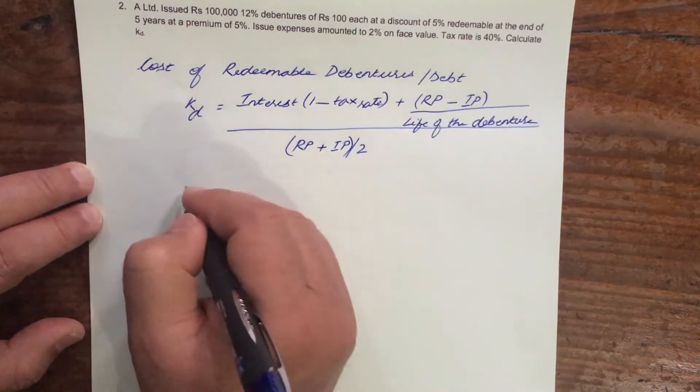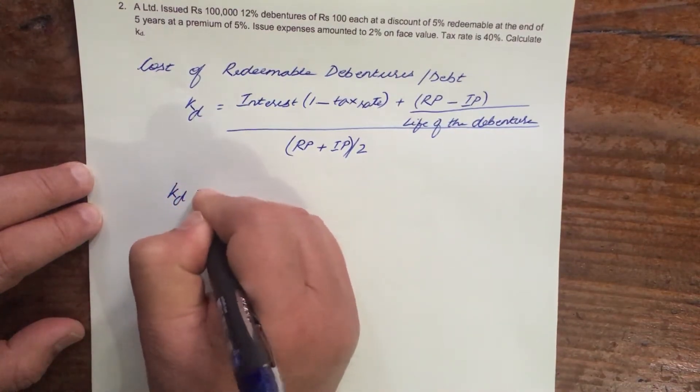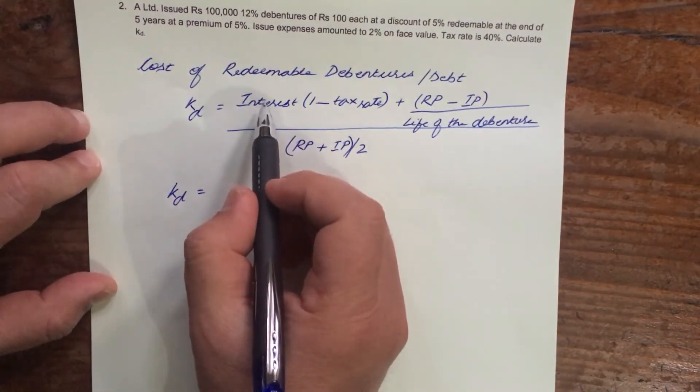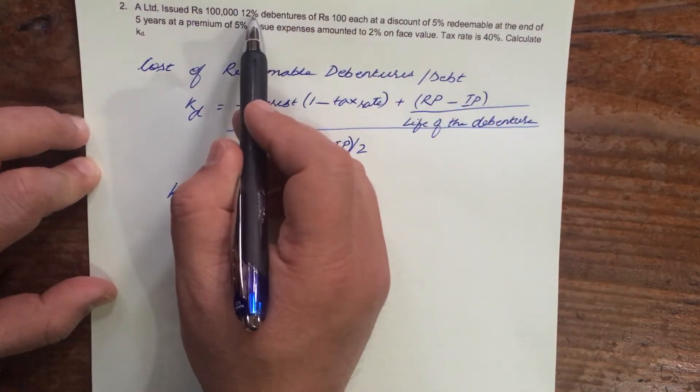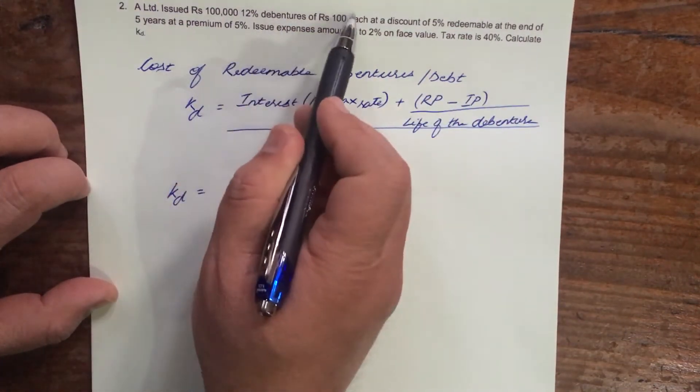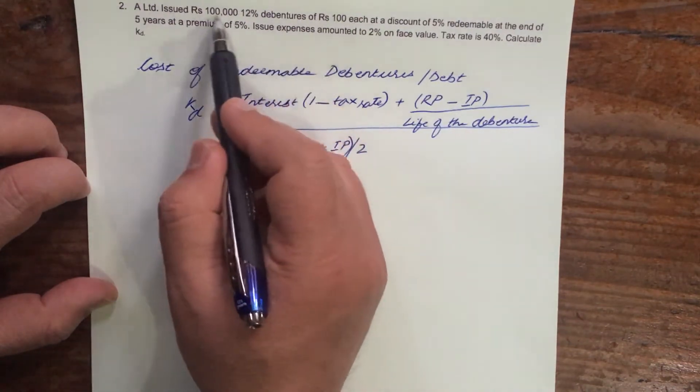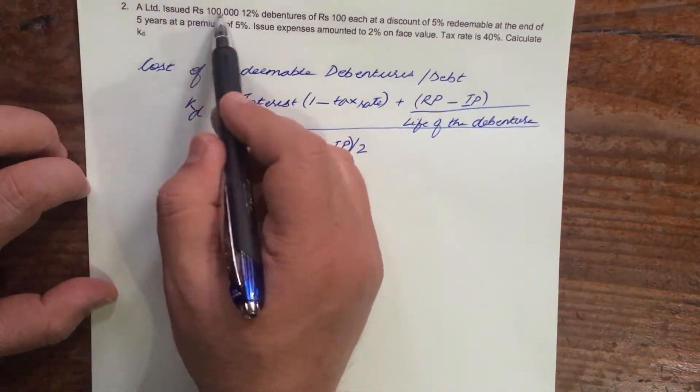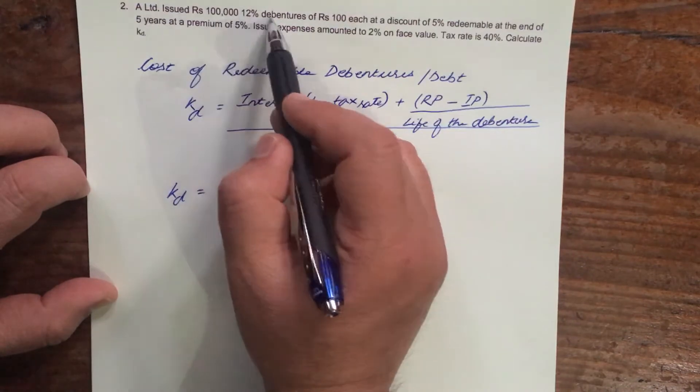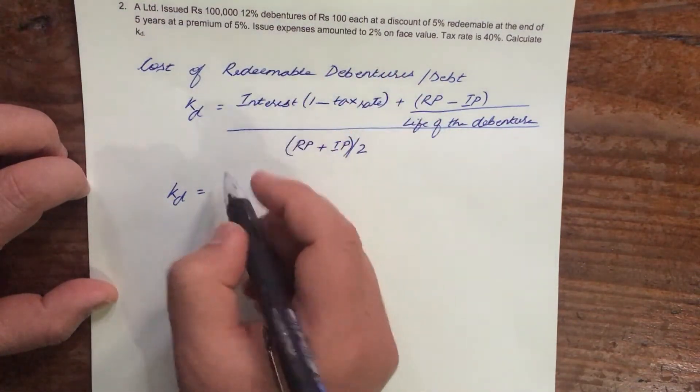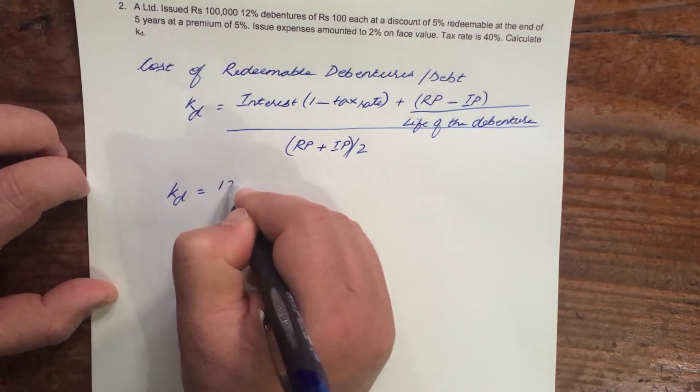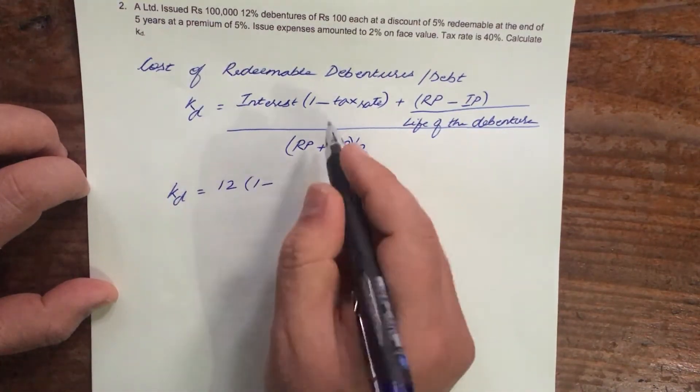Now how will you do this? So KD is equal to interest. How will you find out interest? Now you take 12%, see it is 12% debentures. Now calculate 12% on the face value, not on the debenture value. This is the debenture value. Always calculate 12% on the face value. So 12% of 100 is 12 into 1 minus tax rate.